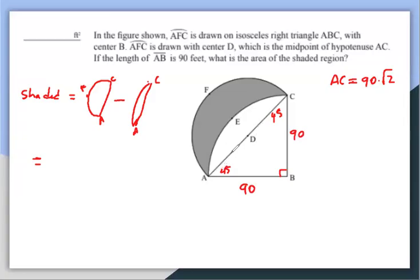But AC is the diameter of this half circle, which means the radius, which is DC, has to be half of this number, which is 45√2, which is same as AD. Okay, so now the area of that region will be, half circle is one half because that's half circle, times π times radius squared, radius is 45√2 squared.